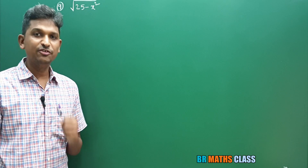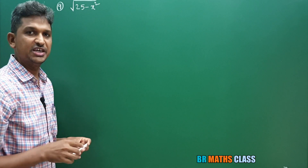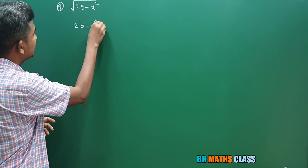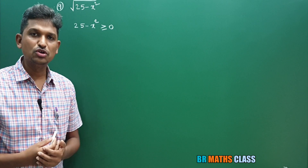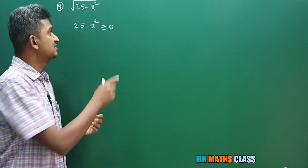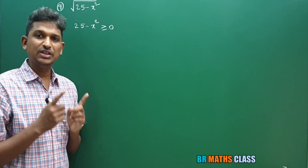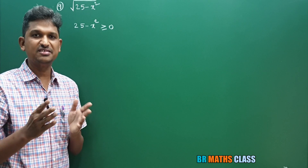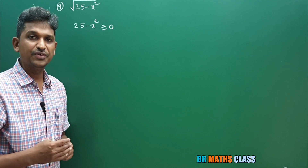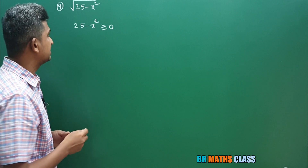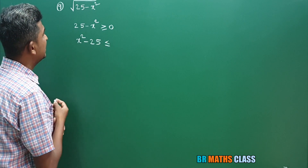Observe question number 9. I want to find the domain of this function. Square root is there, so 25 minus x squared must be greater than or equal to zero. To apply wavy curve method, the expression must be in the form (x minus a)(x minus b). So I'll multiply the complete inequality by minus: 25 minus x squared becomes x squared minus 25, and the inequality sign changes from greater than or equal to, to less than or equal to zero.